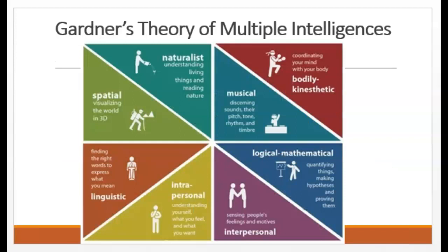Howard Gardner loved this idea of multiple intelligences and ran with it. He said that IQ tests measure verbal, math, and spatial aspects of intelligence, but they were still overlooking other abilities. Gardner proposed eight intelligence types: verbal, mathematical, spatial, bodily-kinesthetic, musical, interpersonal, intrapersonal, and naturalist.